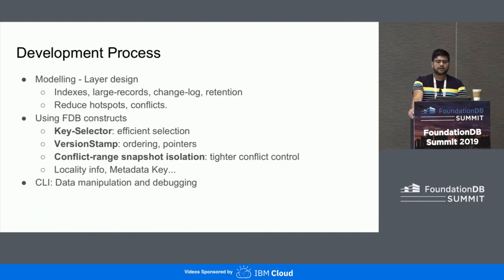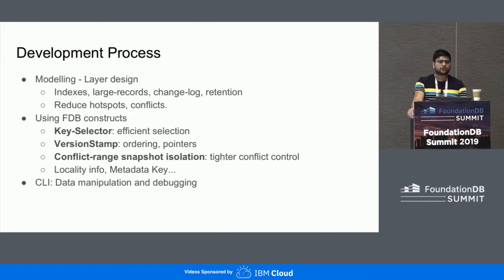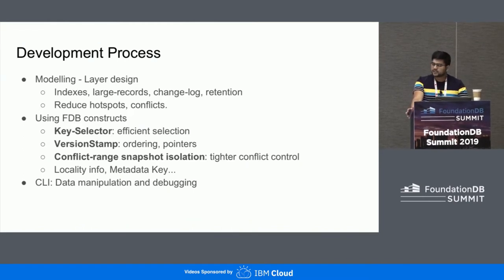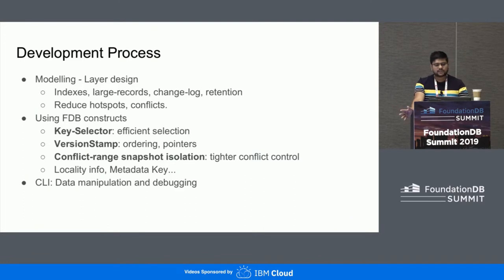The initial modeling work started with mapping our data access patterns and tables onto the key-value schema using the very flexible set of constructs that FDB provides. Some of these are key selectors that can be used to efficiently locate keys within certain offsets. Version stamps are extremely useful — they can be used as pointers to connect rows, as a proxy for time to create ordered logs, to generate unique IDs, and so on. Conflict ranges and snapshot isolation provide much finer control over conflict management.